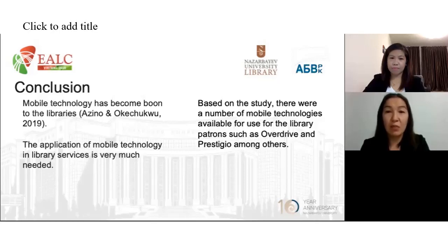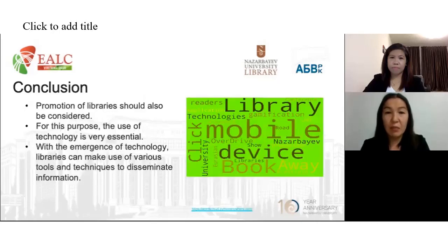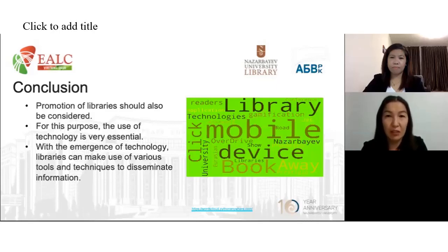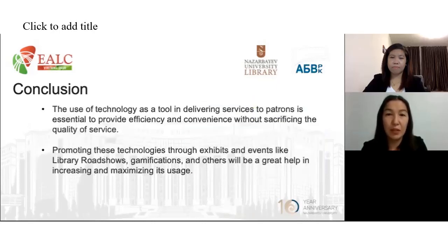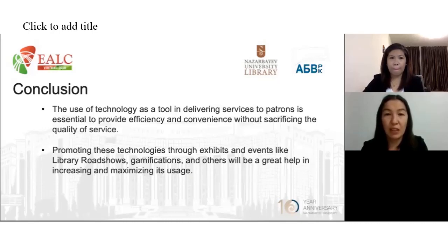Based on the study, there were a number of mobile technologies available for library patrons, such as Overdrive and Prestigio, among others. Academic libraries are encouraged to give convenient access to applicable data, keeping in mind the goal of addressing the issues and needs of users. Promotion of library services should also be considered, and the use of technology is very essential for this purpose. With the emergence of technology, libraries can make use of various tools to disseminate information. Marketing and promotion of these services to maximize their use is very important. The use of technology as a tool in delivering services to patrons is essential to provide efficiency and convenience without sacrificing the quality of services. It should also be noted that proper work with electronic devices requires librarian instruction and development of student skills in working with information available on reference websites and applications.